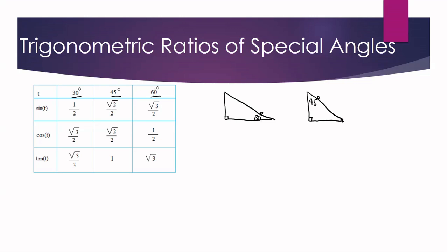So for today, we are not going to use a calculator. The question is, how did we get these values? You are going to notice that the special angles — 30 degrees, 45 degrees, and 60 degrees — are the angles involved in special right triangles. So here is our special right triangle.